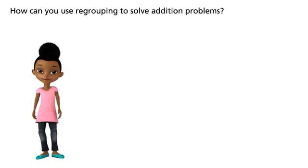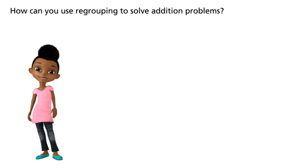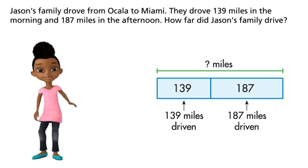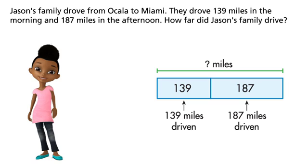How can you use regrouping to solve addition problems? Jason's family drove from Ocala to Miami. They drove 139 miles in the morning and 187 miles in the afternoon. How far did Jason's family drive?